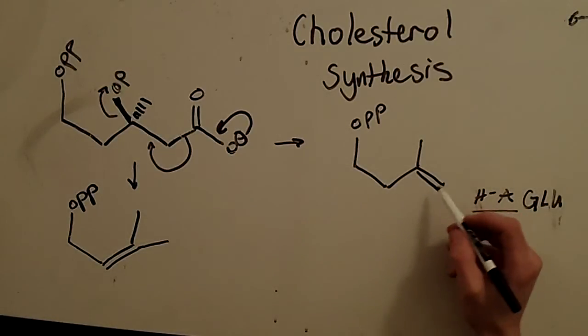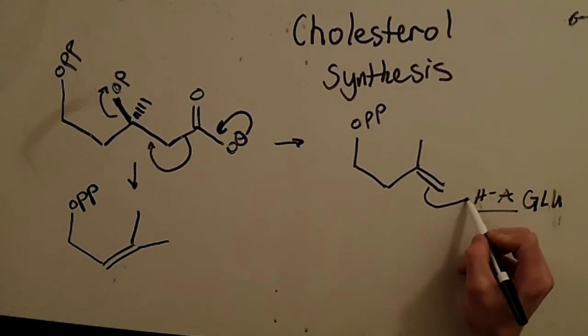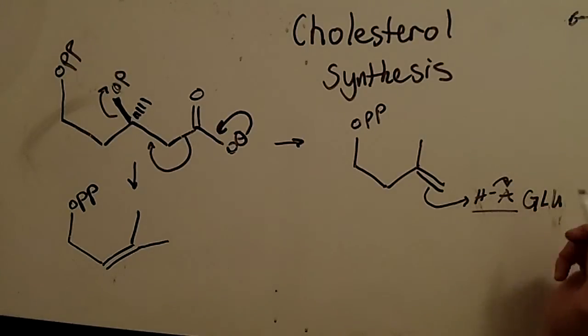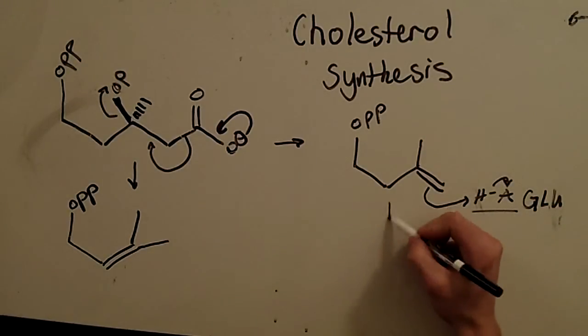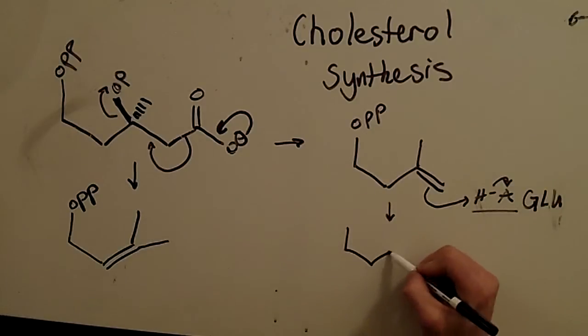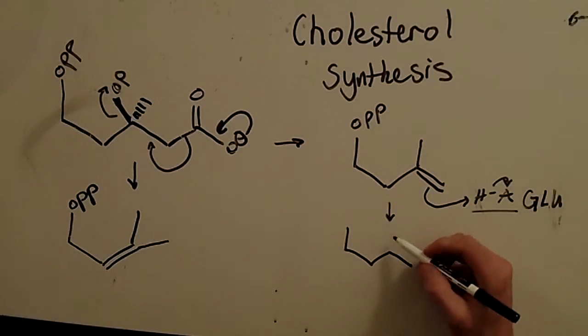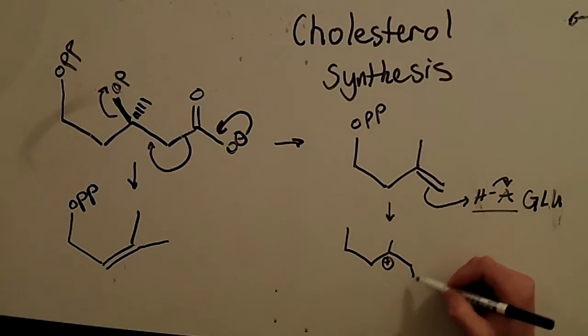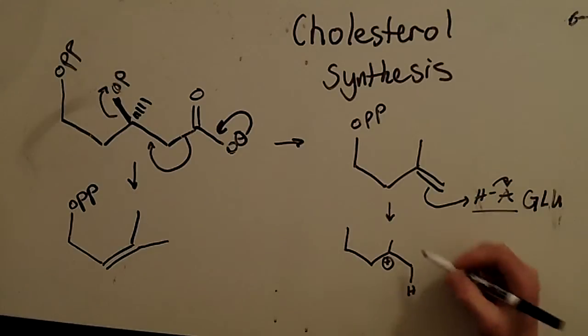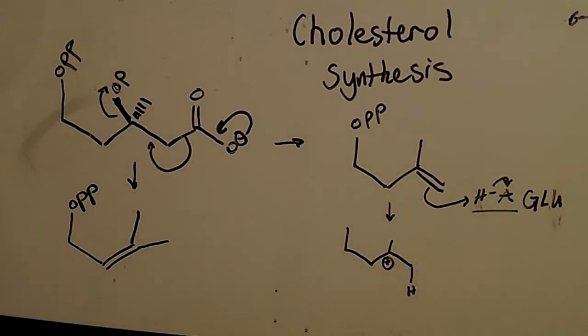So this glutamate residue is attacked with the pi system. It gives up its proton. What do we have? We have a positive charge here. And we have that proton here. Maybe we put it in. It's a proton here, like this.